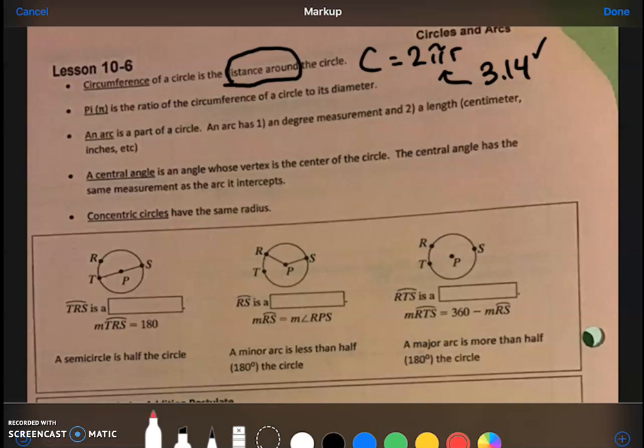Like this is an arc right here, highlighted in red. It has two things: an arc has a degree measurement—maybe 80 degrees, 90 degrees, and so forth—and it has a physical length. Like if you took a ruler and bent it around this red arc here, you can figure out how many centimeters or inches it is. We're going to calculate the length later today.